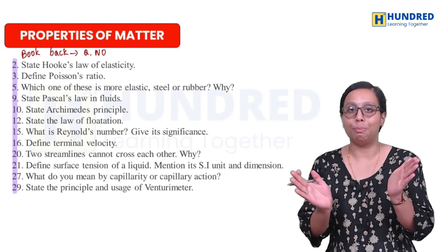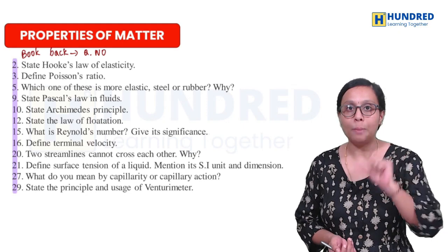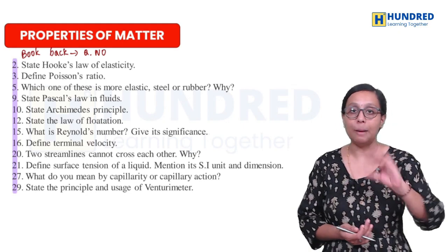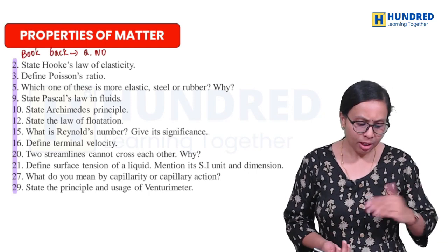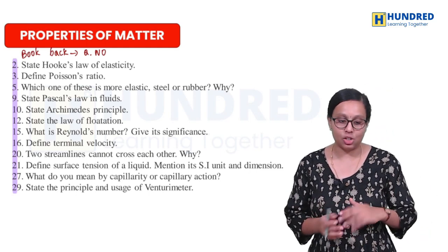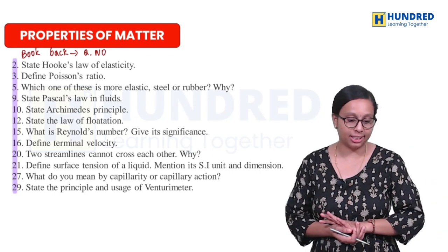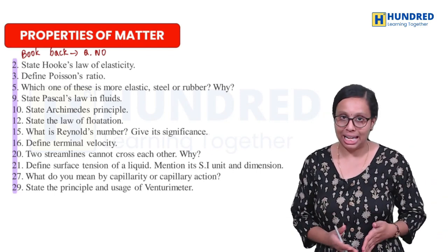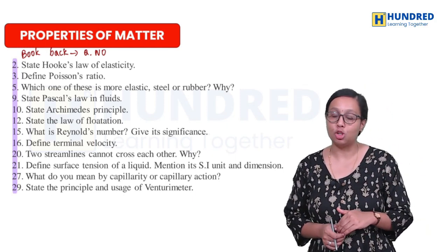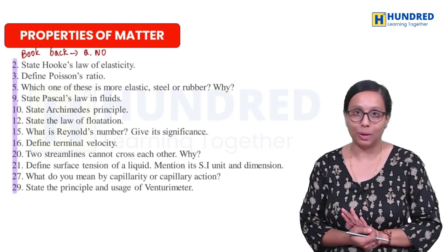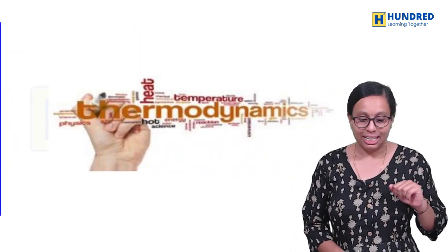If you look at the full topic at once, you will be confused. But if you cover it part by part, you can clear up all the concepts. Important questions include: State and explain Surface Tension — its unit and dimension. What do you mean by capillarity or capillary action? State the principle and usage of the Venturimeter. These are important book-back questions.